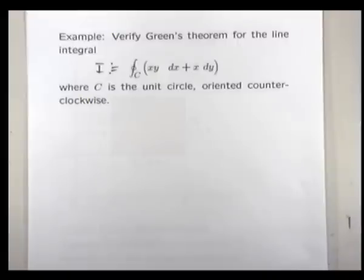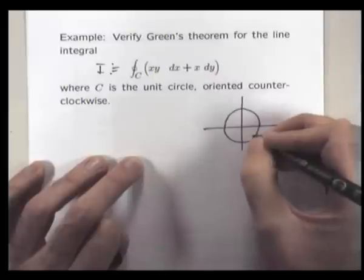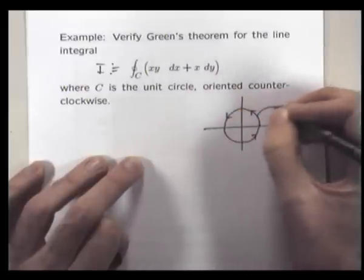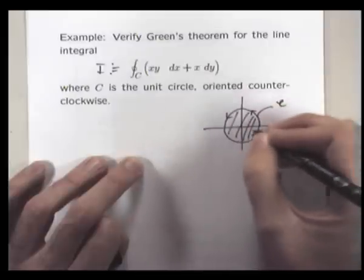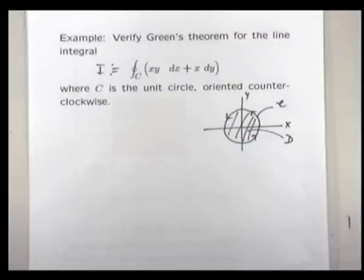And what it means when they say verify Green's theorem, they mean basically compute the line integral, compute the double integral in Green's theorem, and then show that they're equal. Okay, so let's make our picture of our region. So, you can see here, our region is pretty simple. It will satisfy the conditions of Green's theorem. And by when I say Green's theorem, I mean the first theorem that I presented.